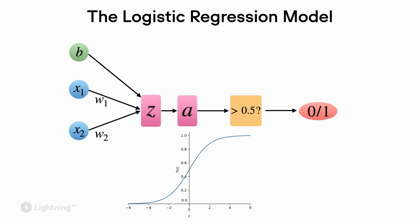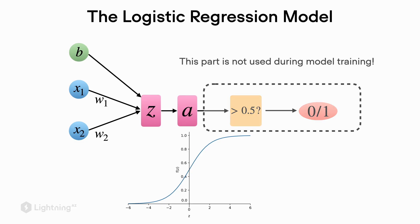To recap, we have the logistic regression model where we have the weighted sum, which goes into a logistic sigmoid activation function followed by a threshold function. To train the logistic regression model, we only need the weighted sum, the activation function, the true class labels, and the loss function. The threshold function along with the class labels are not part of the training — we can use them later to make predictions, but for training we just need the weighted sum and the activation function.